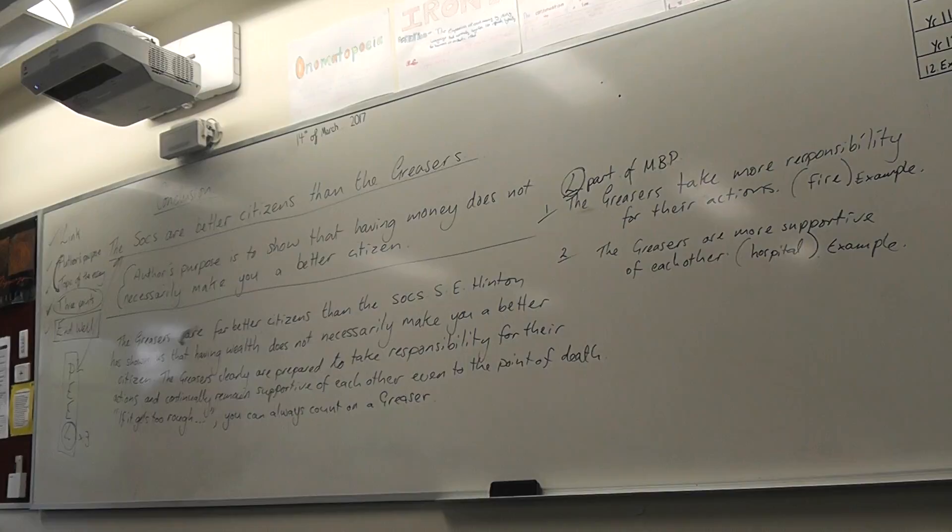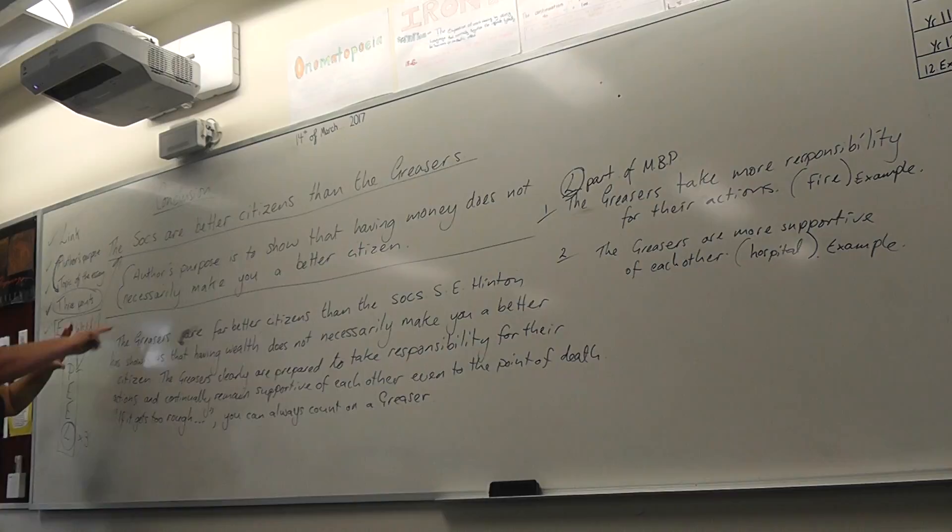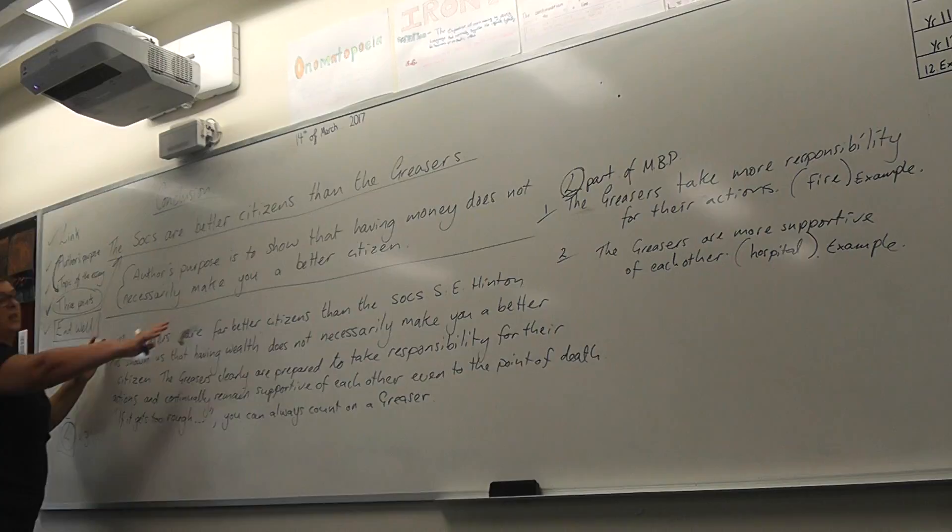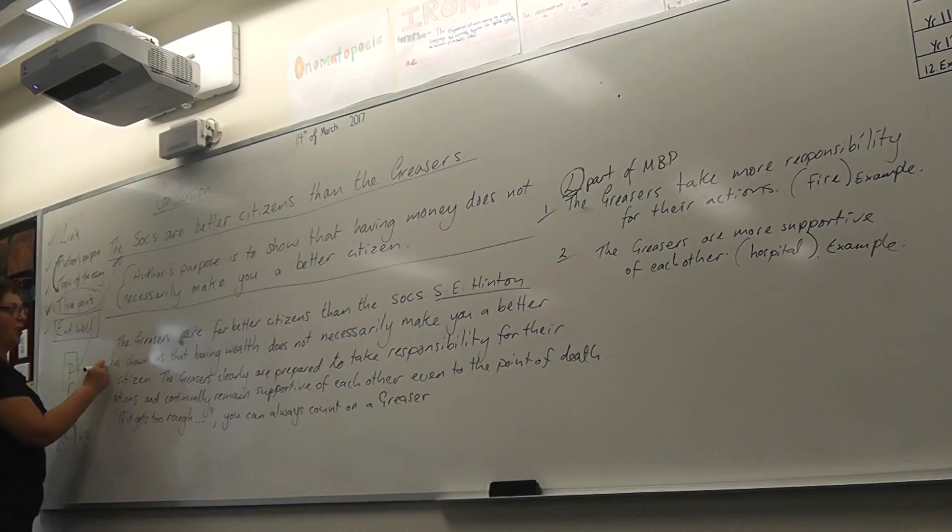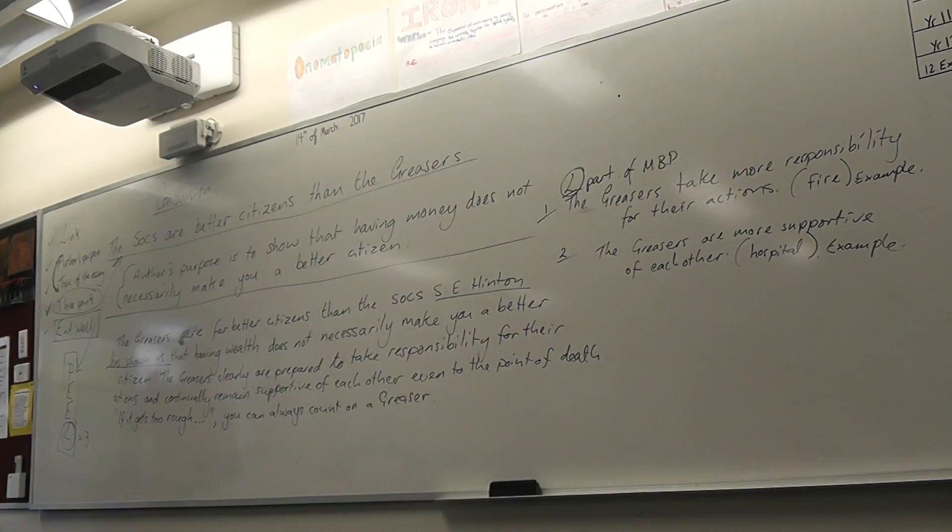So you can see actually that my conclusion here, if you looked at it, the size of it, given that there would probably be one more little piece of information from my third main body paragraph which isn't actually included here, the size of this paragraph would be actually quite similar to the size of the paragraph in our introduction. Would you agree? S.E. Hinton has shown us. I could have said the author's purpose, but I've actually used her name instead and said S.E. Hinton has shown us, but it's the same thing. Are there any questions about writing a conclusion?